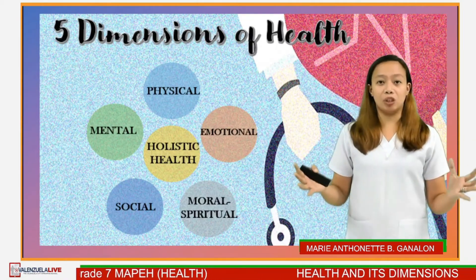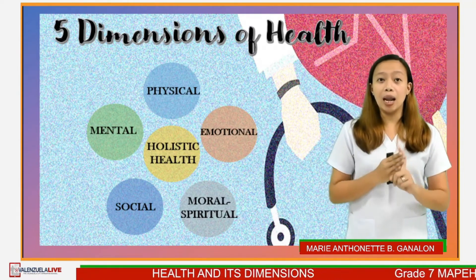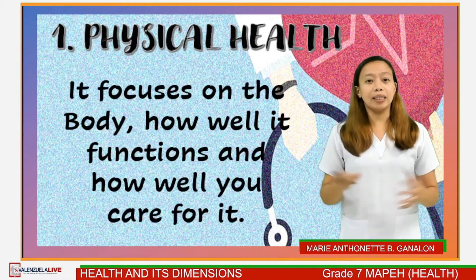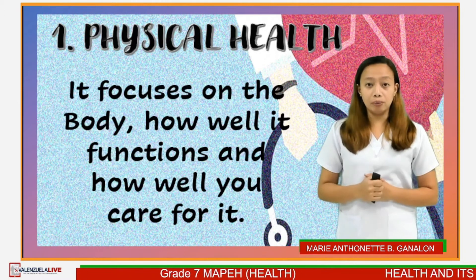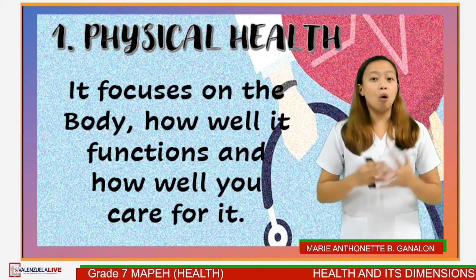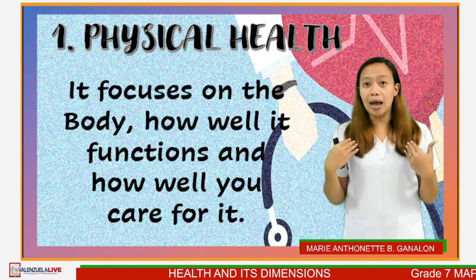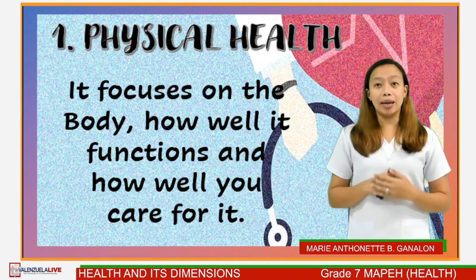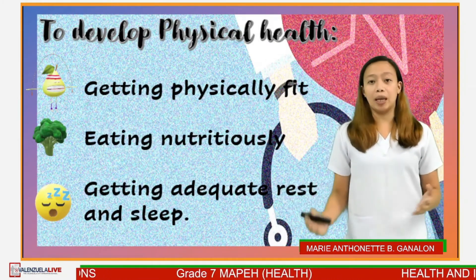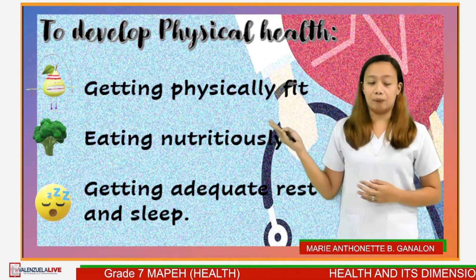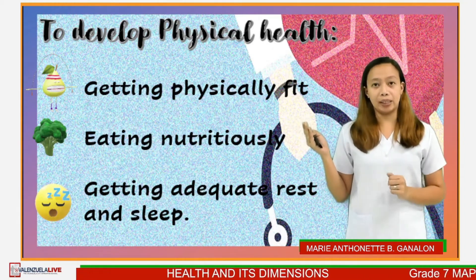These are the five dimensions of health: physical, mental, emotional, social, and moral spiritual. Let's start with physical health. Physical health is concerned with the body, how it performs, and how well it is cared for. It is a condition in which all internal and external body parts, organs, tissues, and cells can function as they should. To improve your physical health, you must be physically fit, do exercise every day, eat nutritiously, and get adequate rest and sleep.